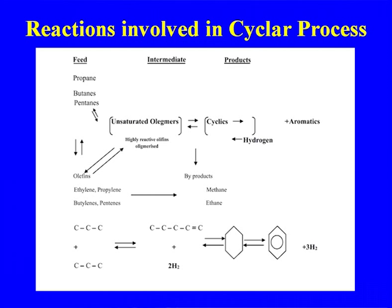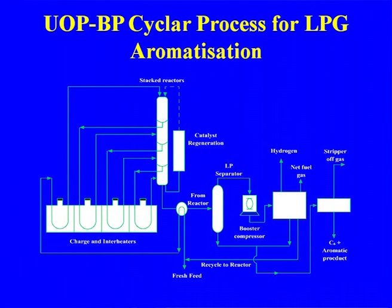The Cyclar process involves a series of reactions where high-purity hydrogen and aromatics are produced from propane/butane. The typical LPG aromatization unit developed by UOP features a series of stacked reactors with inter-heaters and continuous catalyst regeneration — similar in concept to the catalytic reforming process. Feed enters, undergoes conversion in the stacked reactors, and the aromatic oil product is recovered, with continuous catalyst regeneration also taking place.